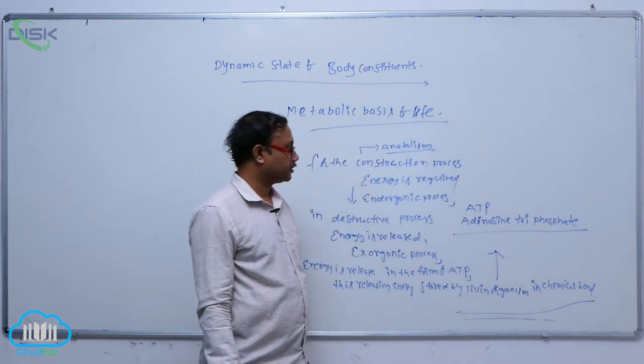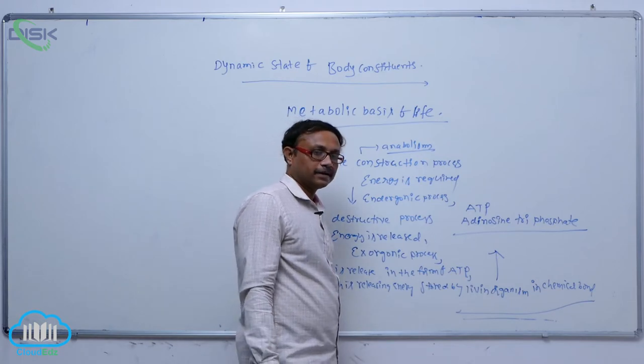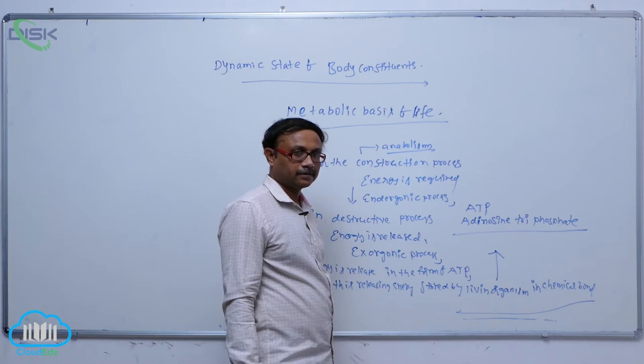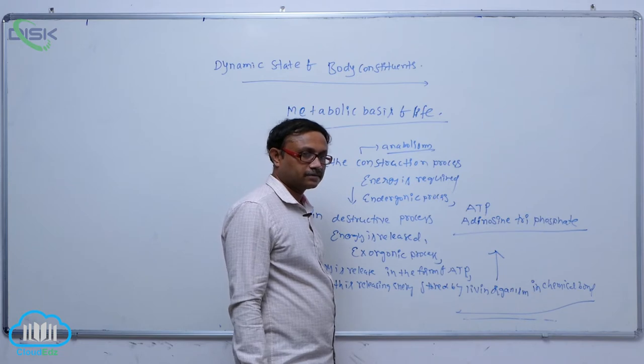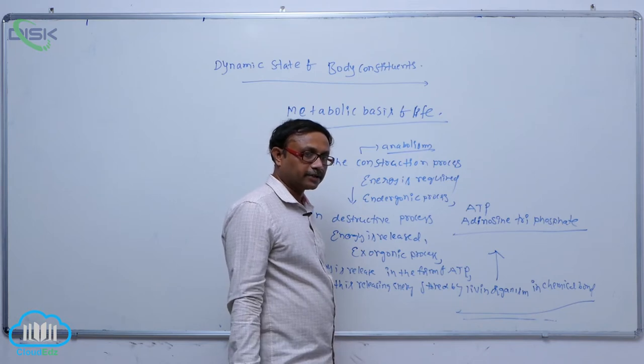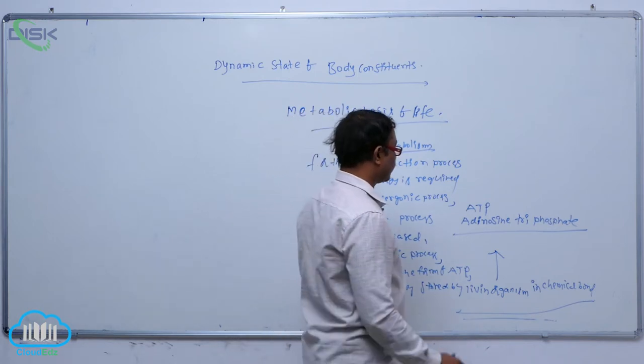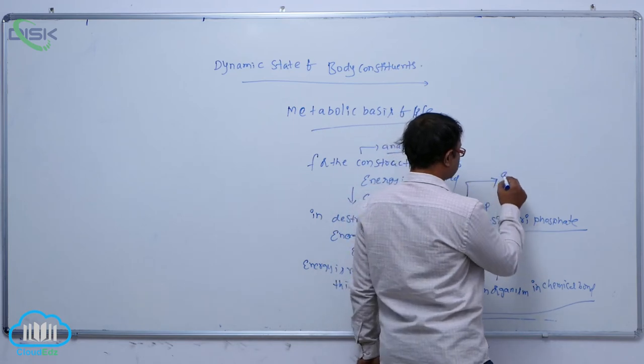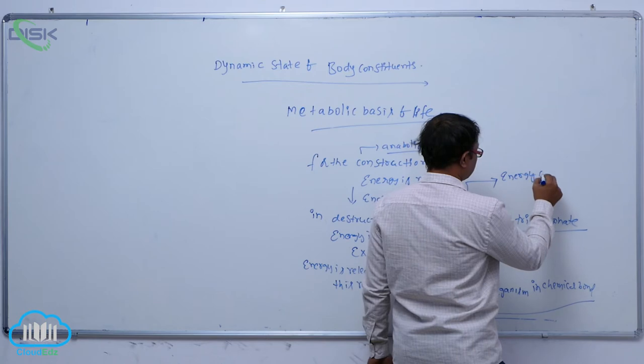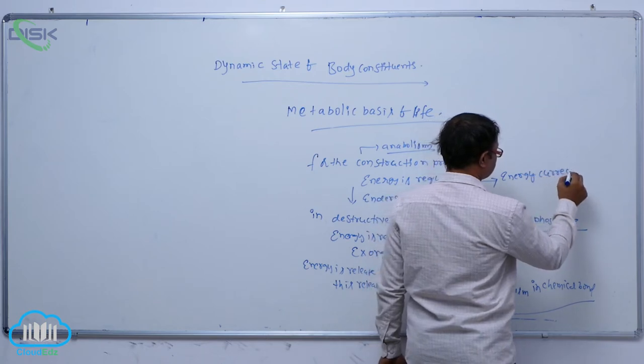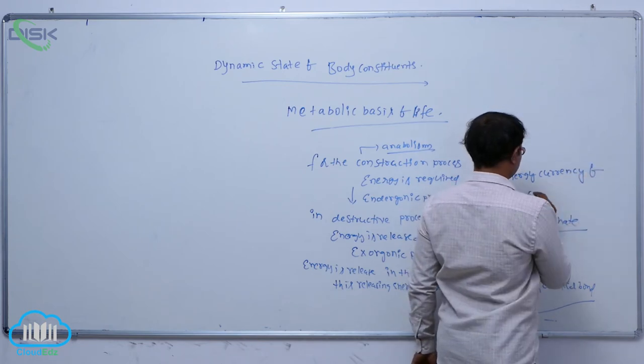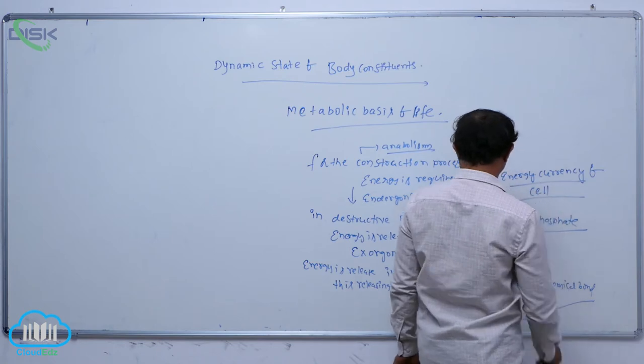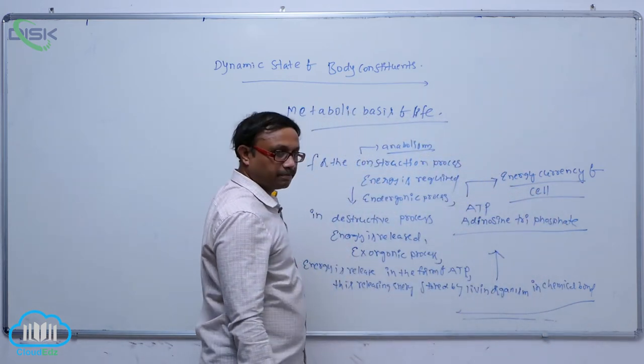If any cell organelle requires that energy, then ATP—generally it is potential energy—depending upon the requirement of that cell organelle, ATP moves that side and gives that energy. That's why ATP is described as energy currency of cell. That is known as metabolic basis of life.